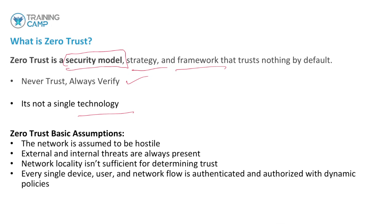Zero Trust basic assumptions: the network is assumed to be hostile. External and internal threats are always present. We're never thinking we're safe because someone has been contained in the internal network. That was so 30 years ago.